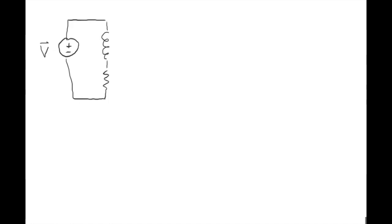The circuit is pretty simple — we're going to have an AC voltage source going through our inductor and then through our resistor. If we write this voltage as a vector, we have some voltage going across the resistor and some voltage going across the inductor. The voltage going across the resistor is just the current times the resistance. Going across the inductor, instead of resistance we have something that adds a phase difference of j·ω·L.